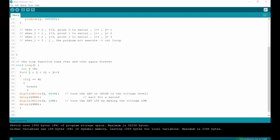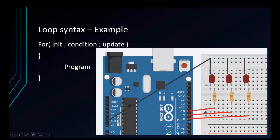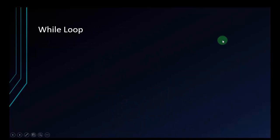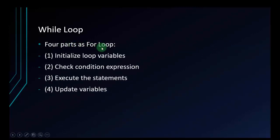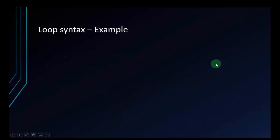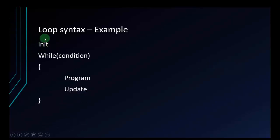Now we will look at the while loop. It is similar to the for loop but slightly different in syntax. It also has four parts as follows: first, initialize the loop variable — but unlike the for loop, you must initialize this variable outside the loop. Then: check condition, execute program, and update the variable. In the while loop syntax, you initialize the begin variable before the while statement, then have while with the condition, run the program in the body, and update the variable at the end.